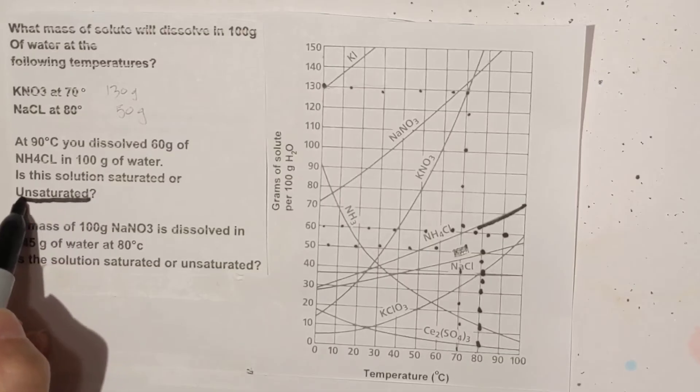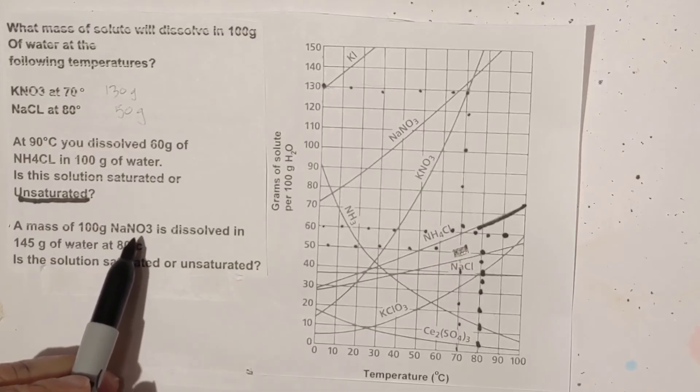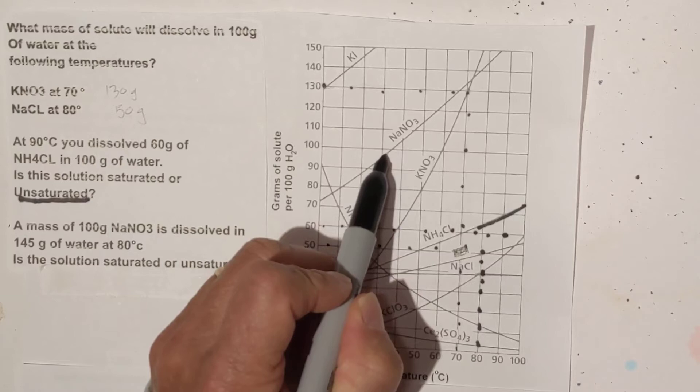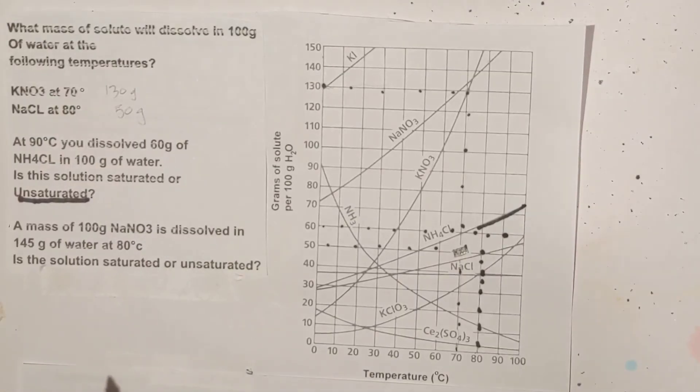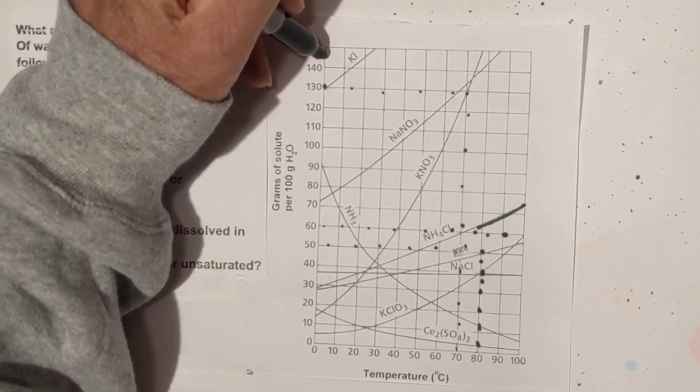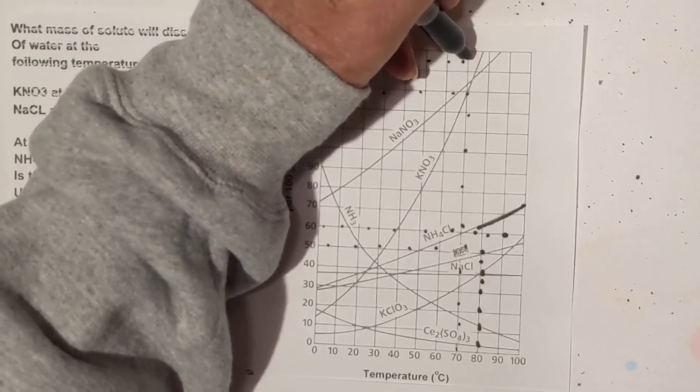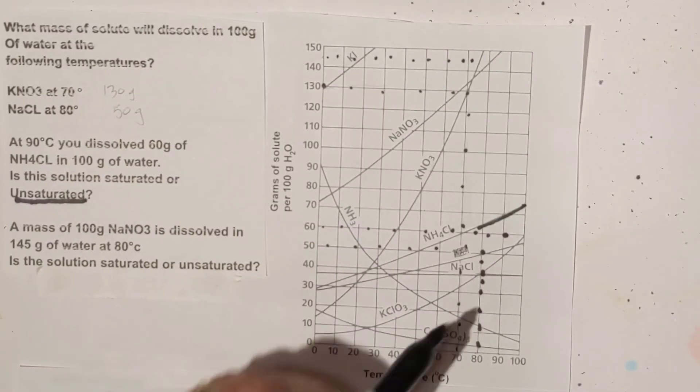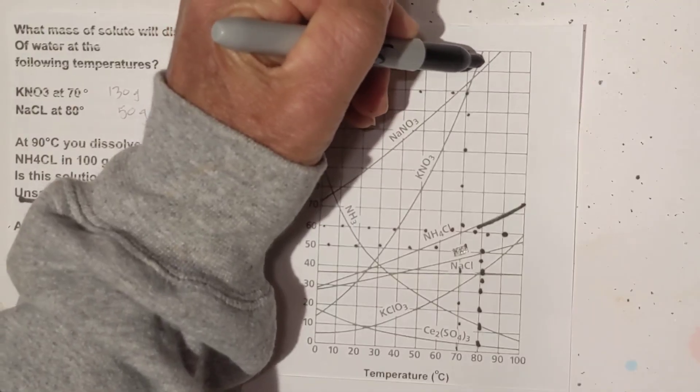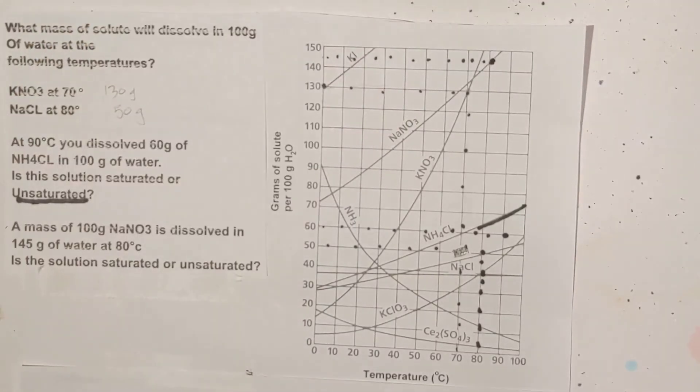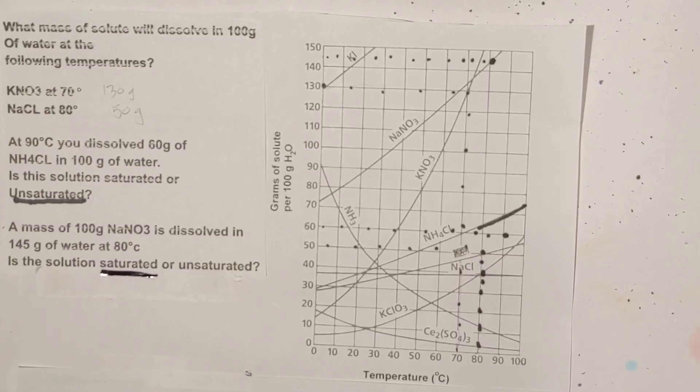And let's do one more. You have a mass of NaNO3, and it is right here, this line. You have 145 grams, which is right here. I'm going to move over to NaNO3 and we are going to 80 degrees, so 80 degrees is right here and it looks like it intersects exactly on the line, so it would be saturated.